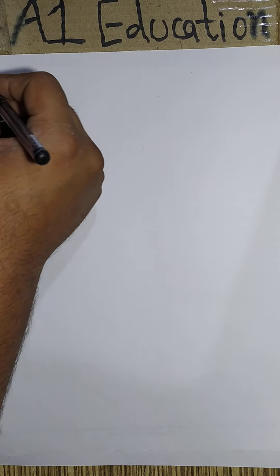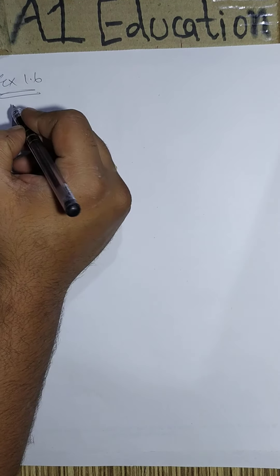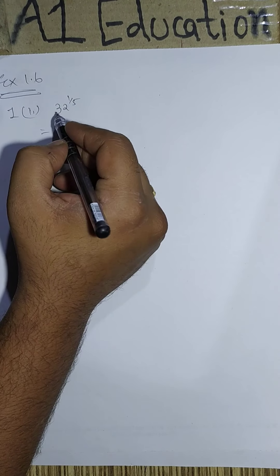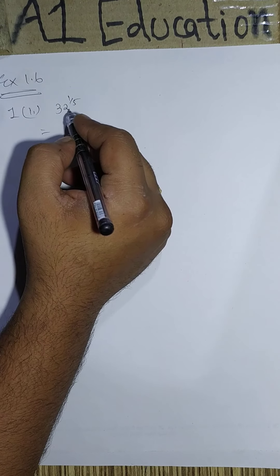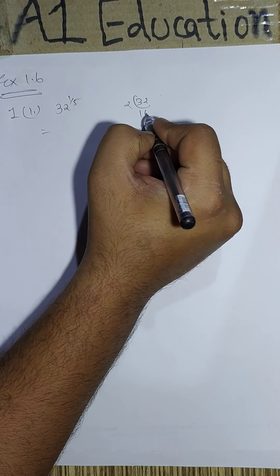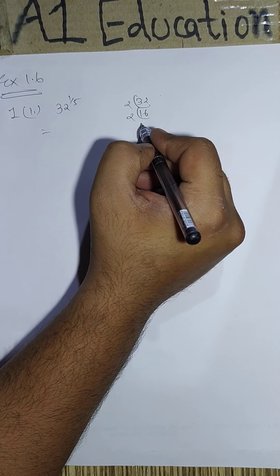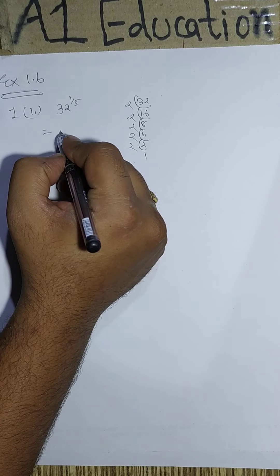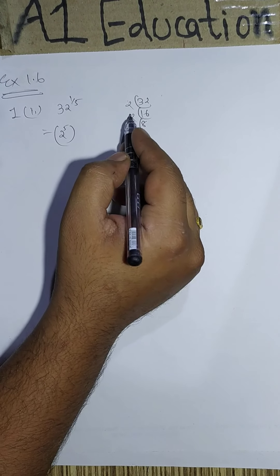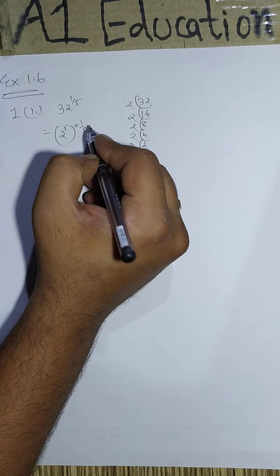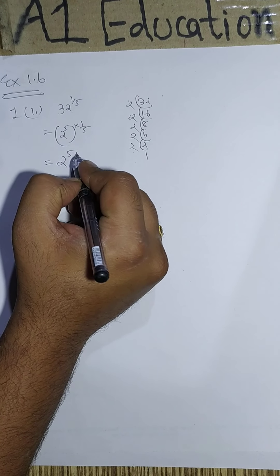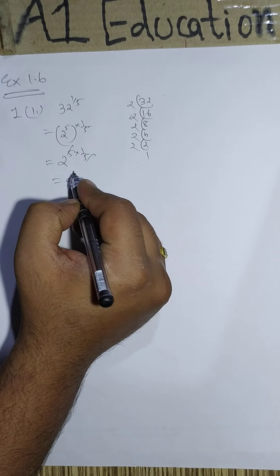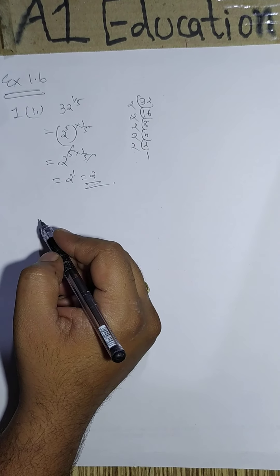Let us see some questions from exercise 1.6. First, second one, it says 32 to the power 1 by 5. How will I simplify this? Convert it into its basic factors. So those factors can be found out by this method. So 32 can be written as 2 to the power 5, 1 by 5. As per the laws of exponent, when the bracket opens, the numbers get multiplied. It leaves 2 to the power 1 which is nothing but 2. This is the answer.